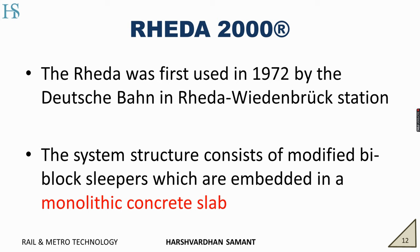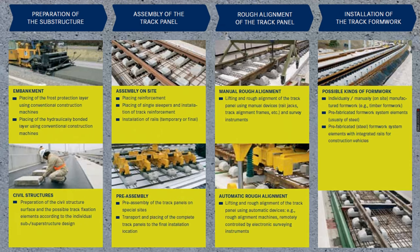The system structure consists of modified bi-block sleepers embedded in a monolithic concrete slab. Speaking of the methodology, first the substructure is prepared: we have embankment or cutting on which the first layer — the frost protection layer — is built up. Then we have placing of the HBL layer, that is hydraulically bonded layer, using conventional construction machines. Then other civil structures are built on it. After having a substructure, we move on to assembly of track panels. Twin bi-block sleepers are first laid, and over that rails are fixed with fastenings — this is a pre-assembled track.